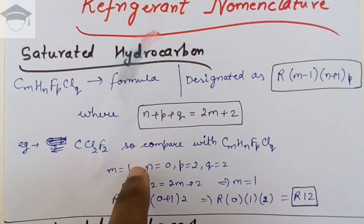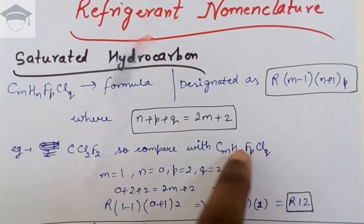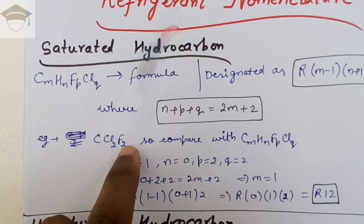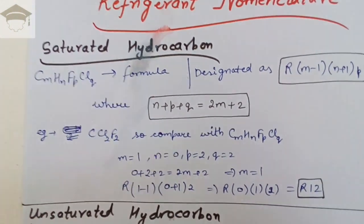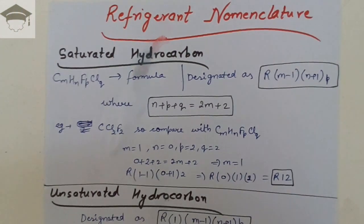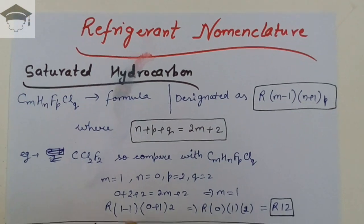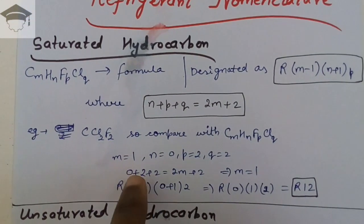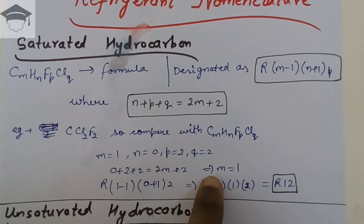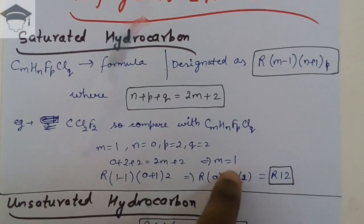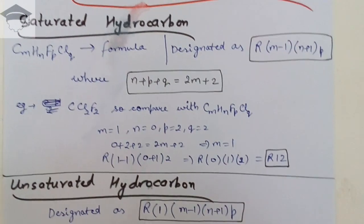Here m = 1 since there is only one C. There is no H, so n = 0. p = 2 (subscript of F, fluorine) and q = 2 (subscript of Cl, chlorine). So m = 1, n = 0, p = 2, q = 2. Using the relation n + p + q = 2m + 2, substituting: 0 + 2 + 2 = 2(1) + 2 = 4. This is satisfied, so we can use this formula.